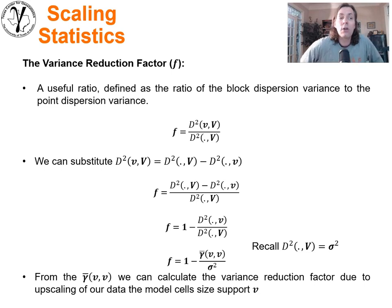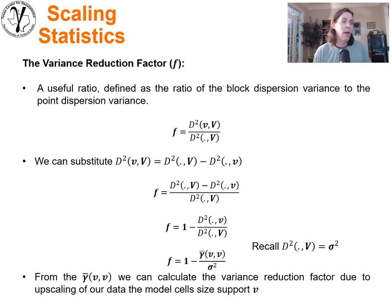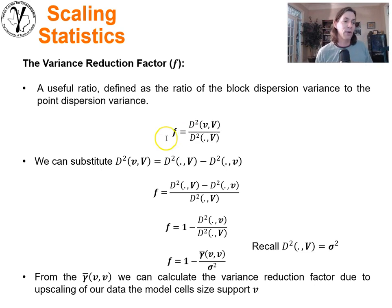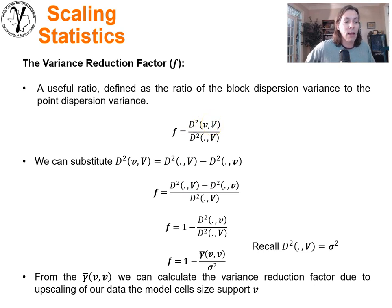The F-factor is a variance reduction factor that you would expect as you upscale or change the scale. It's a ratio of how much variability you see at the model cell scale v within the model area V, over the total amount of variability in the original dataset at the native data scale (point support). So the F-factor tells us: when going from data to a model cell, how much should I reduce the variance? We can substitute using Krige's relationship — the dispersion variance of v within V equals the dispersion variance of point within V minus the dispersion variance of point within v.